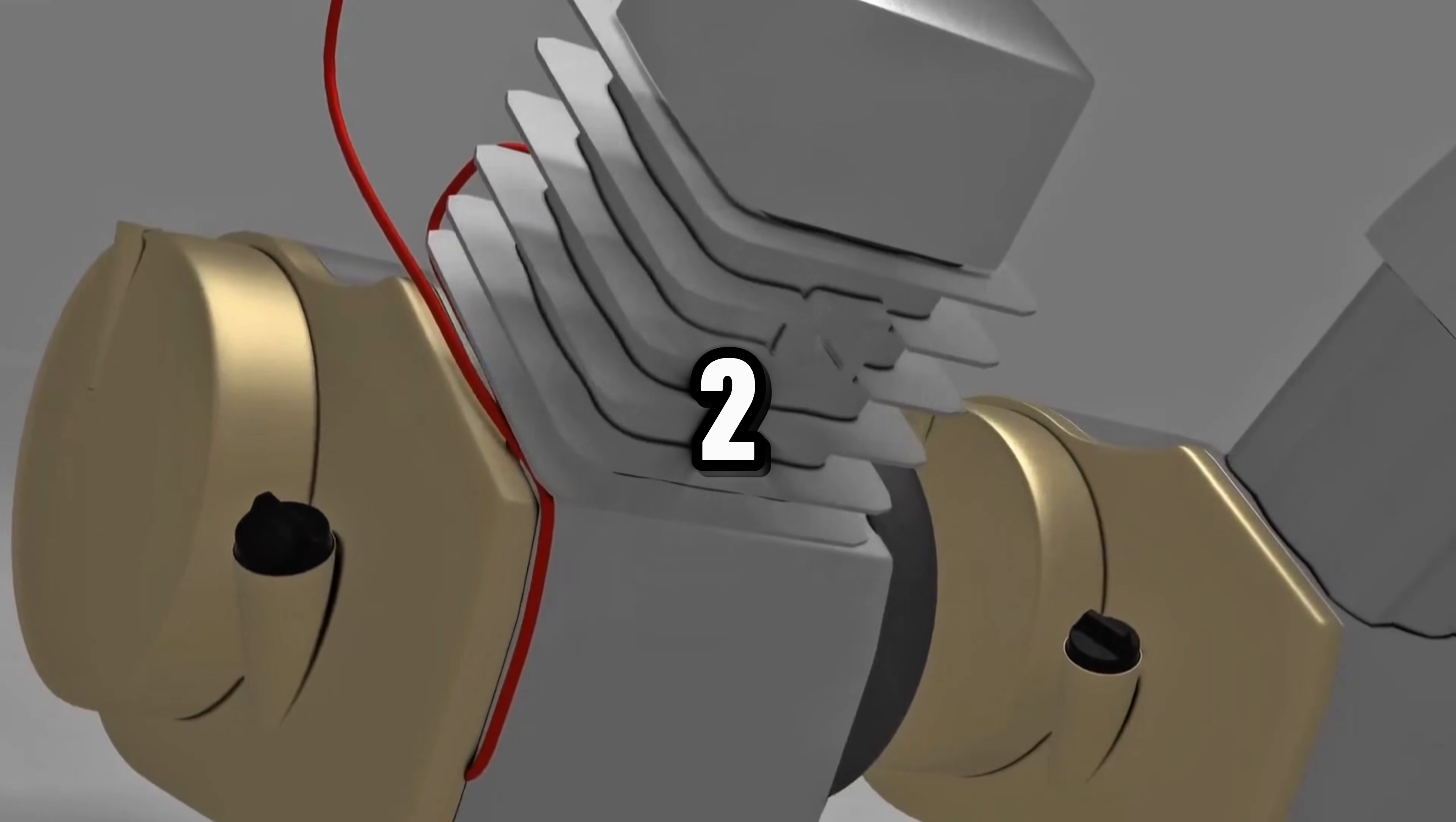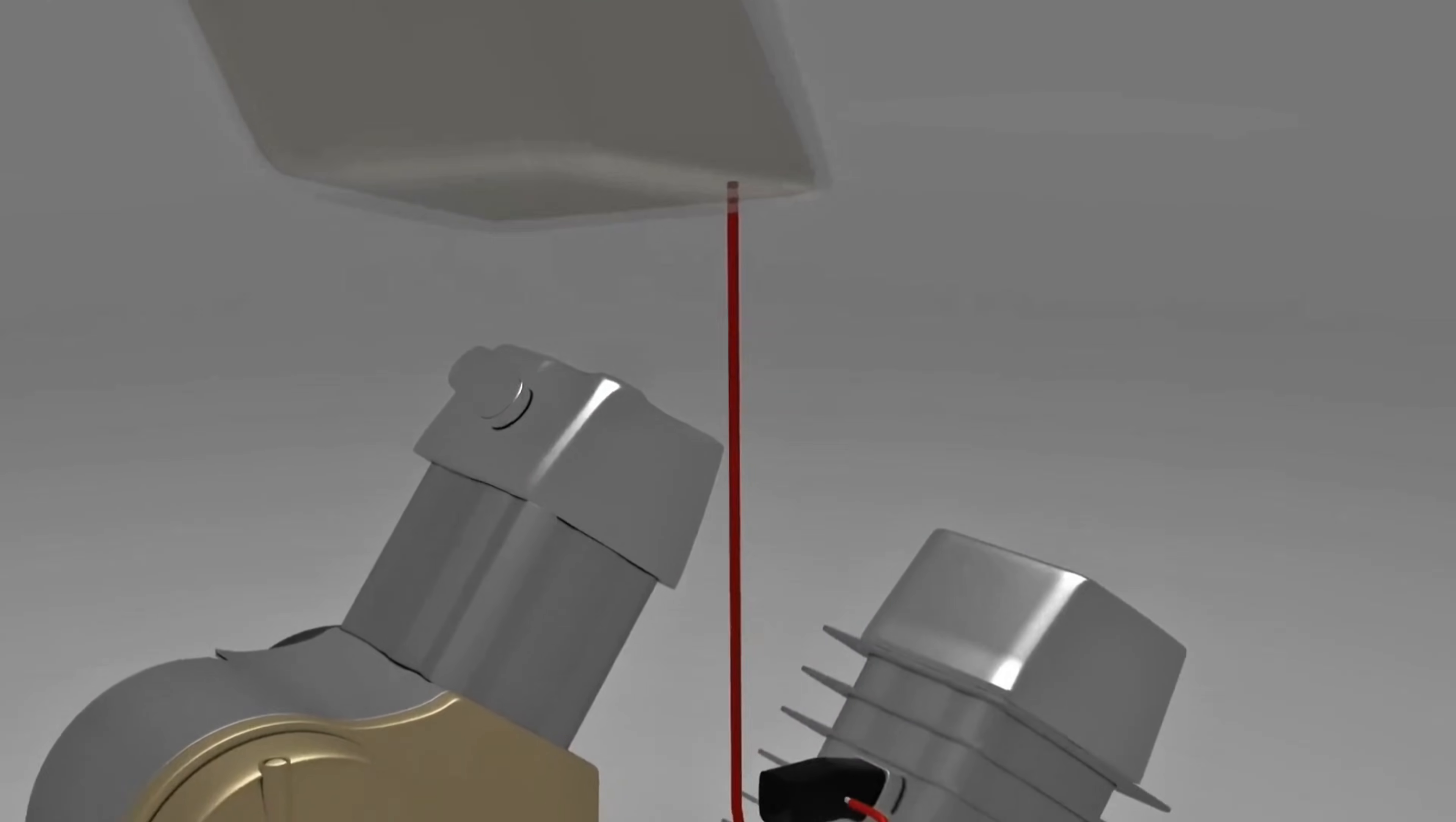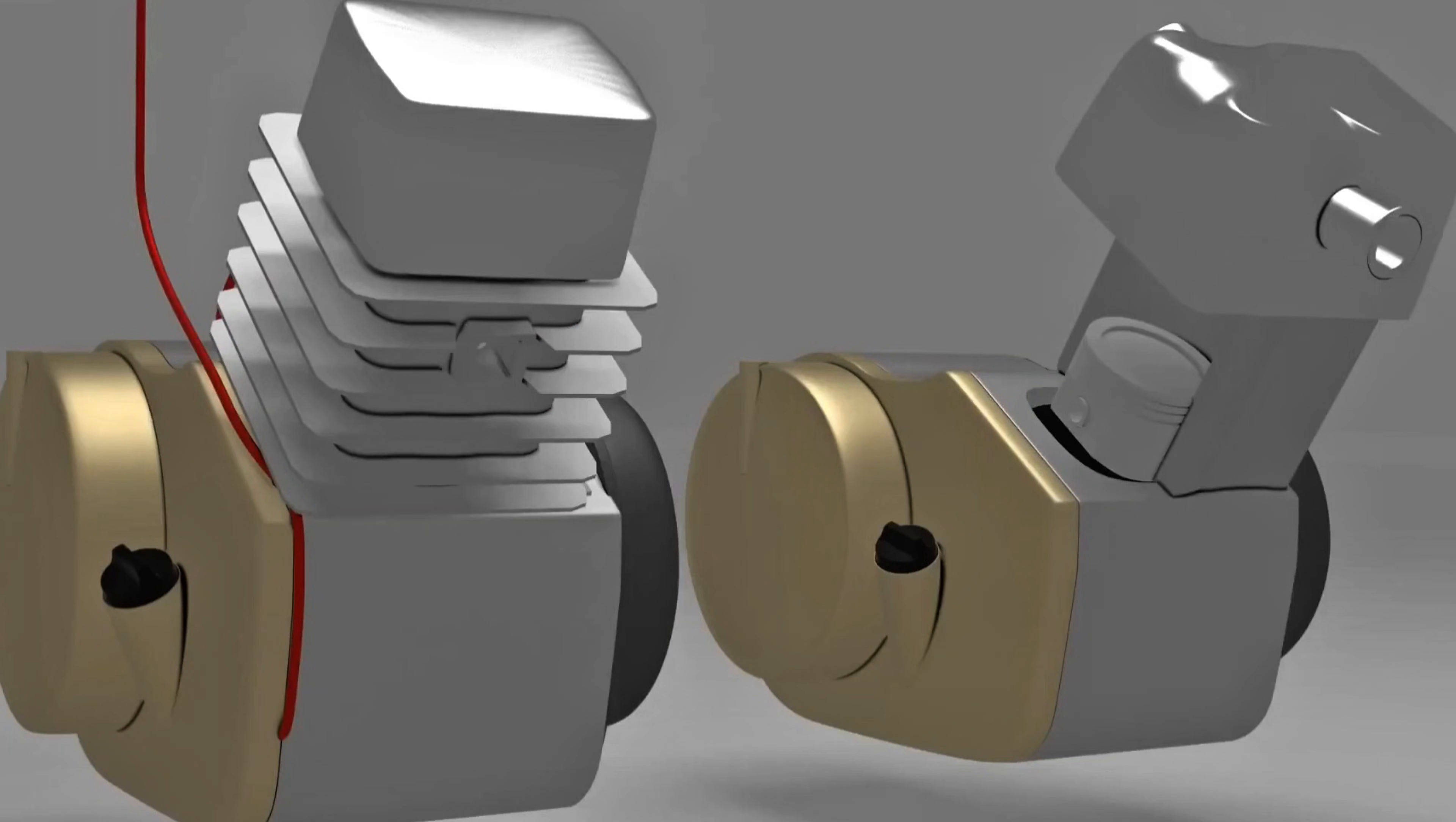Have you ever wondered why two-stroke motorcycles emit white smoke? Well, two-stroke engines have their own special type of oil, which we call side oil. What is it called in your area? Feel free to write it in the comments.